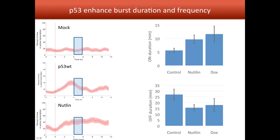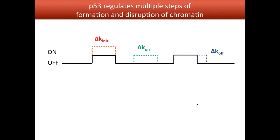Looking at the on and off durations, the on duration increases with both p53 overexpression conditions — doxycycline or nutlin — from 5 minutes to 10 or even 12 minutes, and the off duration decreases from almost 30 minutes to about 15 minutes. This means increased p53 concentration enhances both burst duration and burst frequency. To my knowledge, it has never been shown that a transcription factor can regulate both frequency and duration of transcriptional bursting simultaneously.